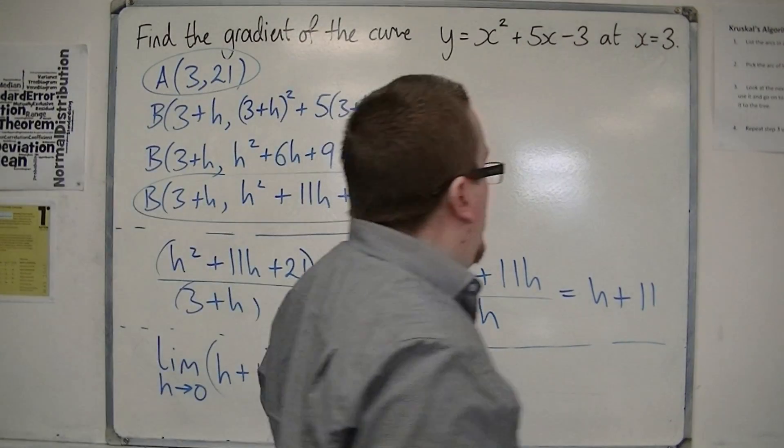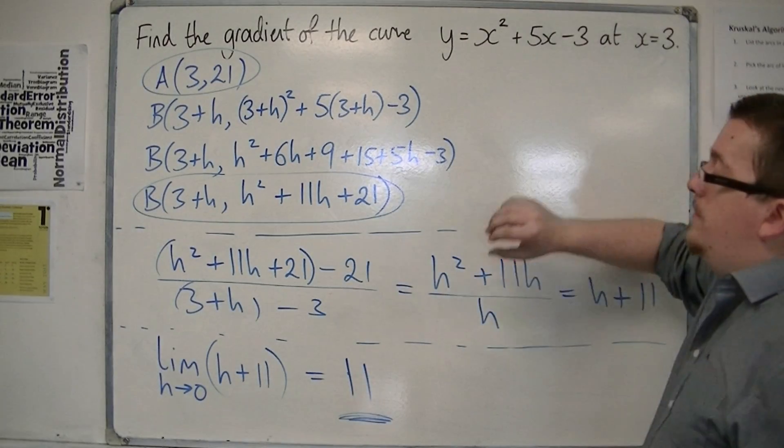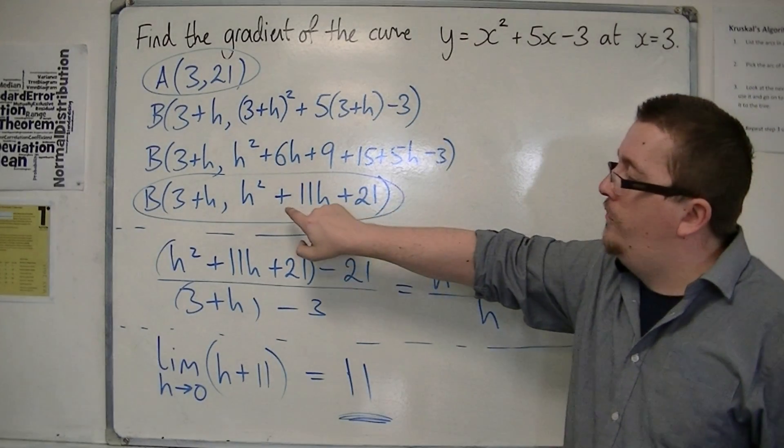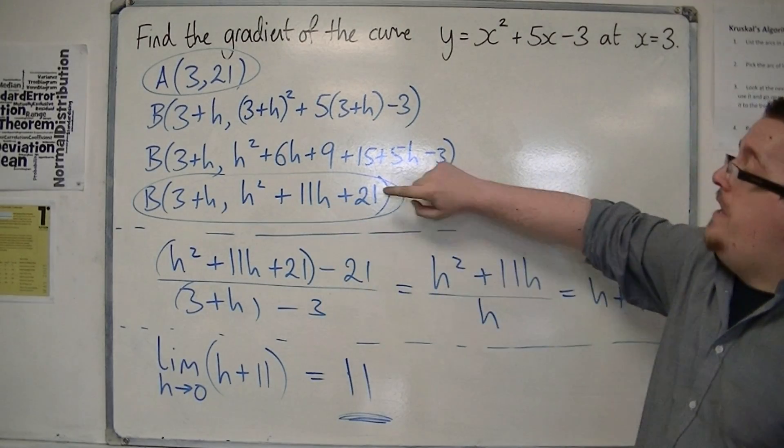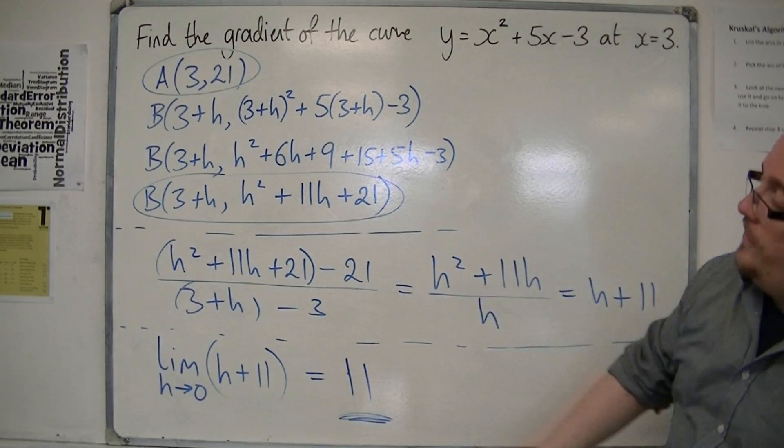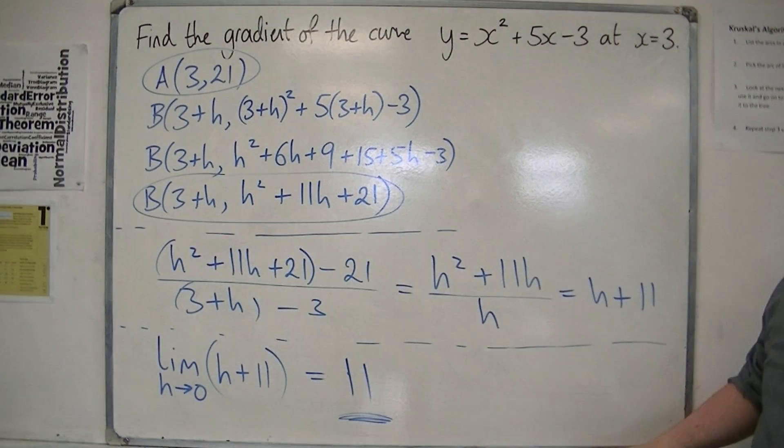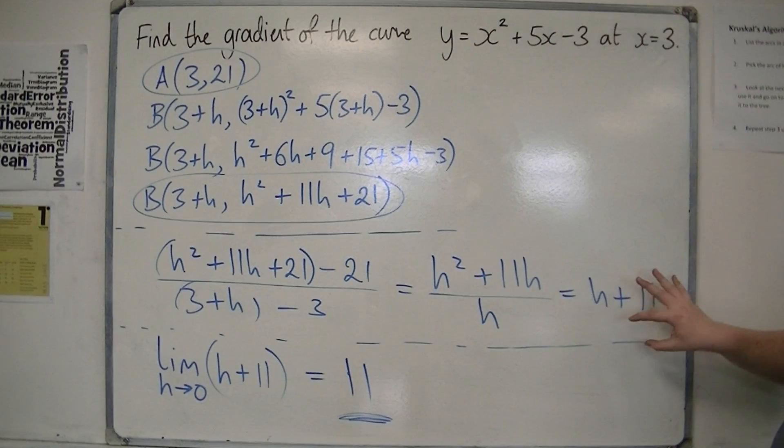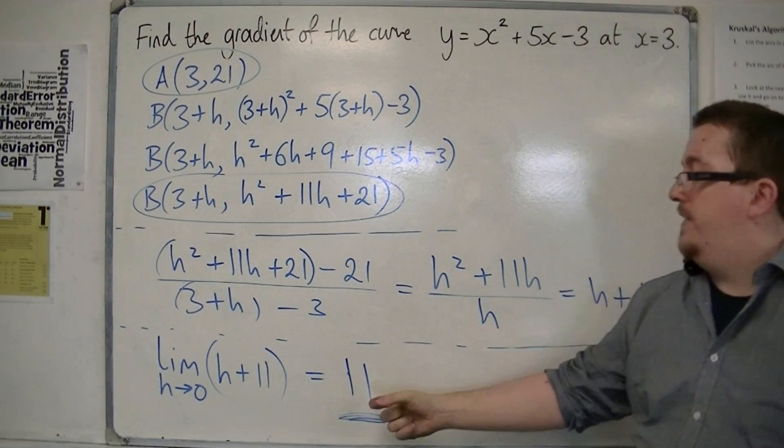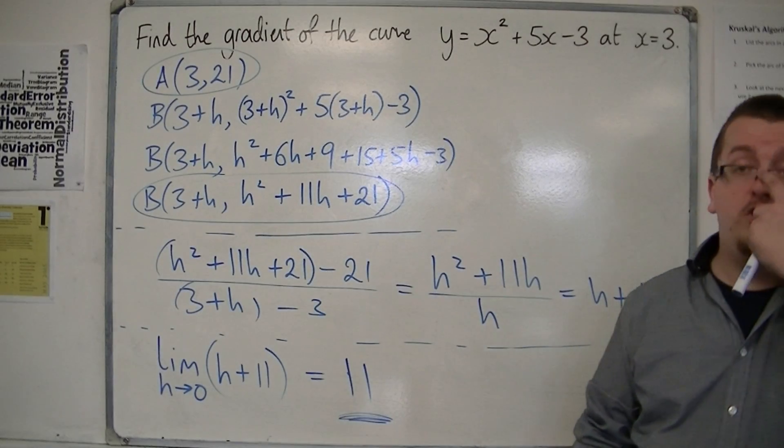So you can see the questions often split up into a part A, B, and C. Part A is trying to make sure that you've simplified and found the y-coordinate of the second point. And the part B is finding the gradient of the chord. And then part C is letting h tend to 0, so you can then identify what the gradient of the tangent would be.